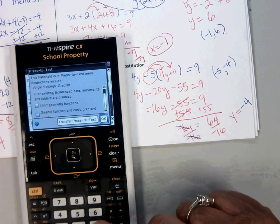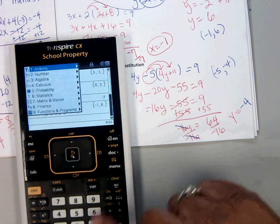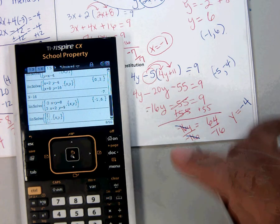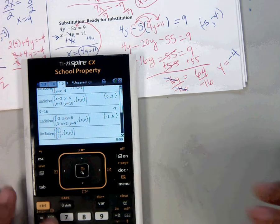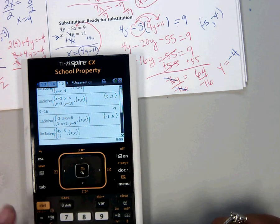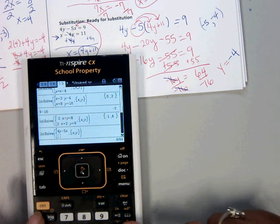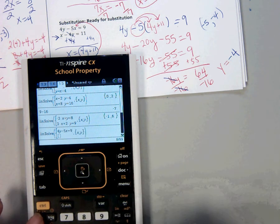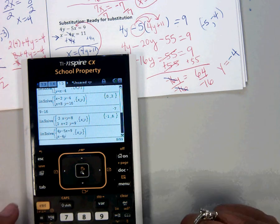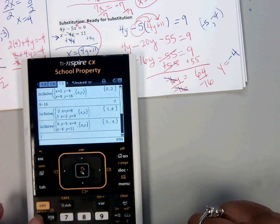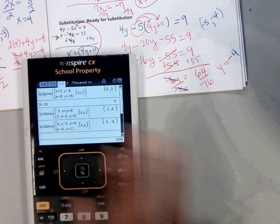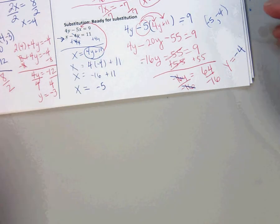I'm going to menu 3, 2 this to make sure I did it right. And we're going to put in 4y minus 5x equals 9. x minus 4y equals 11. And we got it right.